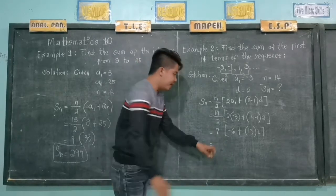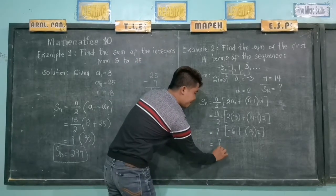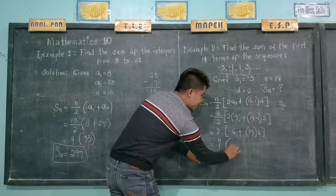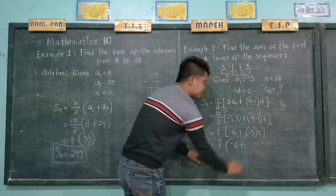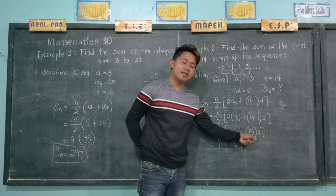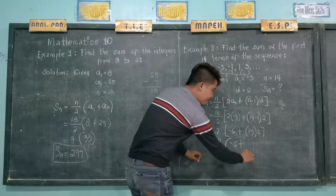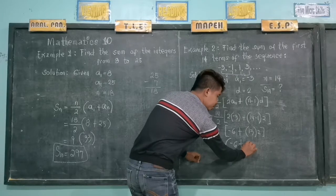We'll simply copy 7. We'll copy negative 6 plus 13 times 2, we have 26.